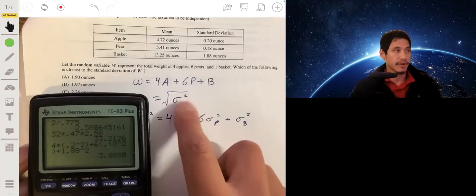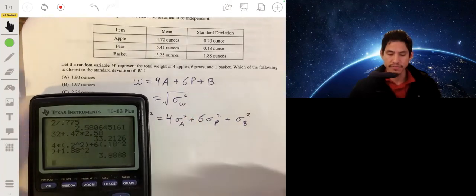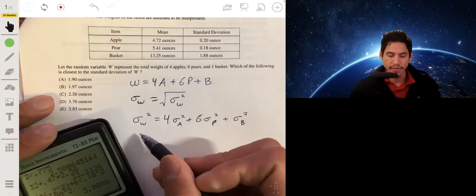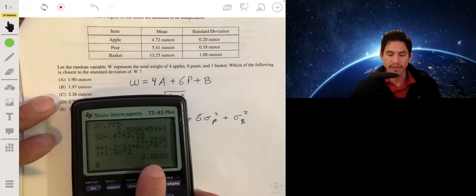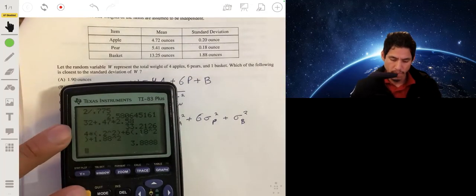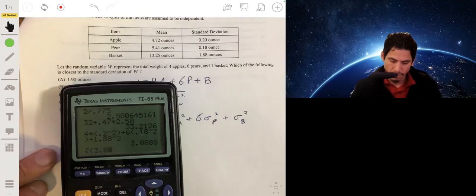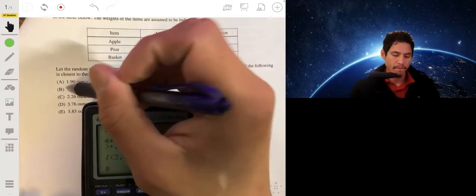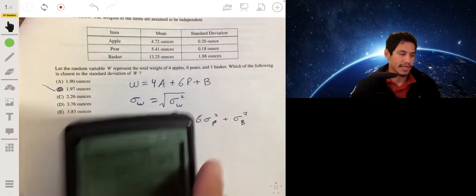Remember now this is the variance, this is what that is. So we take the square root of this, and that will be the standard deviation. So the standard deviation will be about 1.97, so our answer is B.